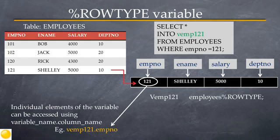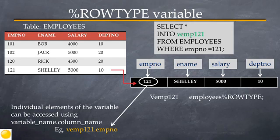If you had to retrieve all the details of employee 121, the query would be written as: SELECT * INTO v_emp121 FROM employees WHERE EMPNO = 121. Each column's value will be populated into the corresponding element of the v_emp121 variable. To access an individual value, the syntax is variable_name.column_name. For example, to access the employee number, you would use v_emp121.empno.